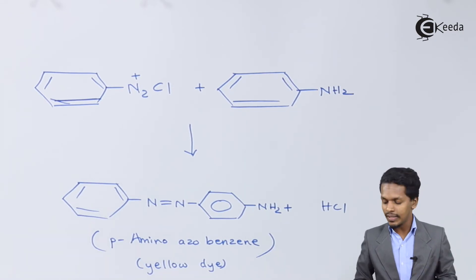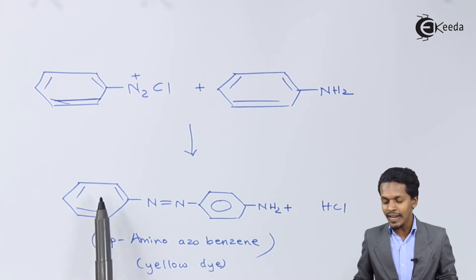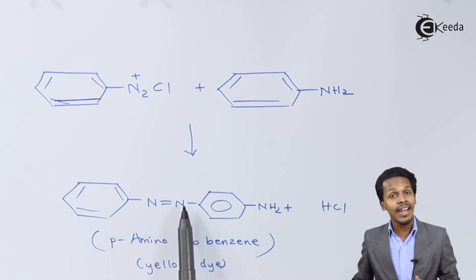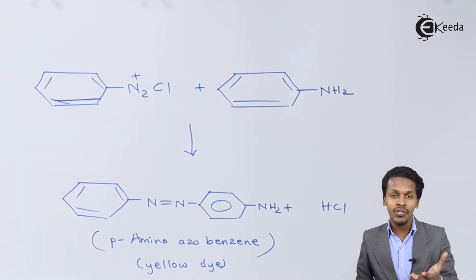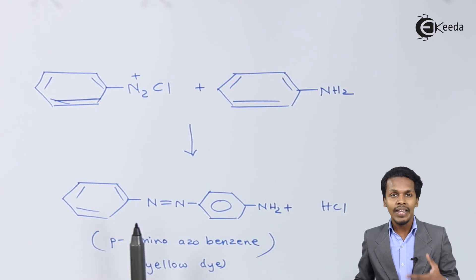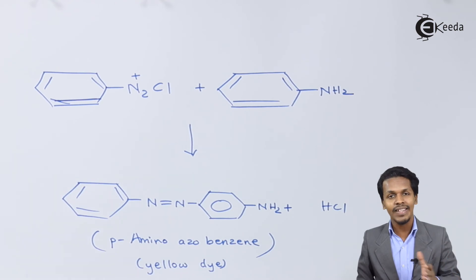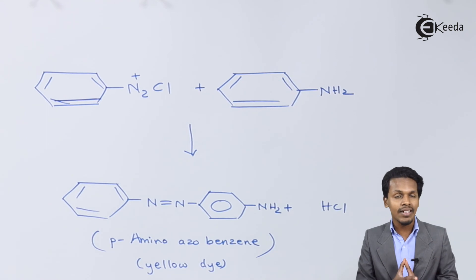Whenever an azo group is formed through azo coupling, the resulting compound is colored. The reason is that benzene is a conjugated system, and the nitrogen atoms forming the N=N double bond also participate in resonance. This delocalization of electrons gives the molecule the capacity to absorb visible light, making these compounds very colorful. For example, para-aminoazobenzene is yellow, and para-hydroxyazobenzene is orange. This is why azo coupling reactions are widely used in the dye industry to produce different colored dyes.